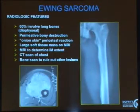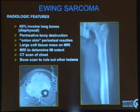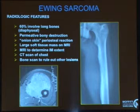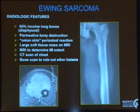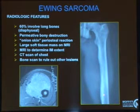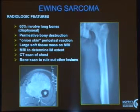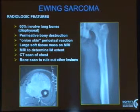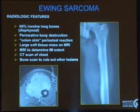60% involve the long bones. They are more common in the diaphysis, whereas most other malignant bone tumors are more common in the metaphysis. Ewing's is a permeative bone destruction — it's very hard to delineate where the tumor starts and stops. It's a very poorly marginated tumor with onion skinning and large soft tissue masses.